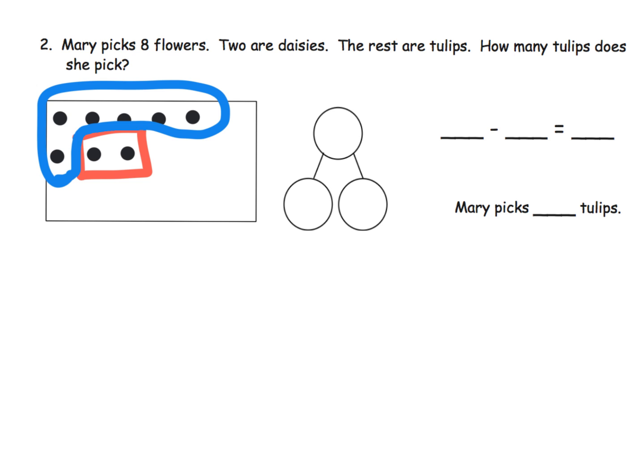So the rest are tulips. So how many tulips does she pick? And we can see if these two are the daisies, these must be the tulips. And the answer is six, right? So let's put that in a number bond. So we have eight flowers as our whole. Two of them are daisies. And the rest are tulips. So the answer is six. The number sentence would be eight minus two is equal to six.